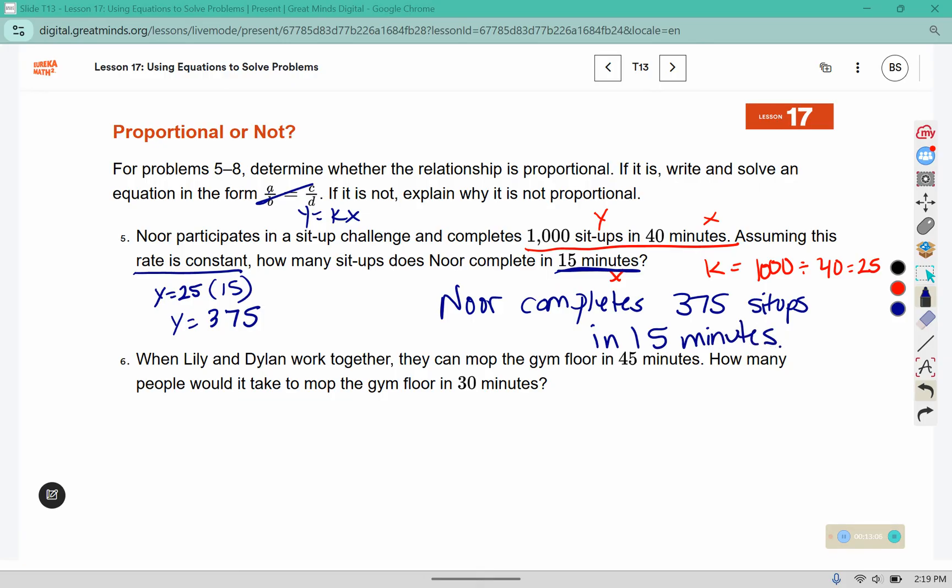The next one says when Lily and Dylan work together they can mop the gym floor in 45 minutes. How many people would it take to mop the gym floor in 30 minutes? So the question is if I had two people and it takes them 45 minutes are they going to work at the same rate if they have three people? Well no. Three people are going to work faster. So the question was if it's not proportional explain why it's not proportional. Three people do not work at the same rate as two people.